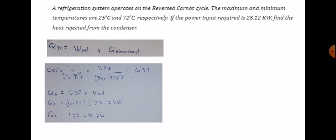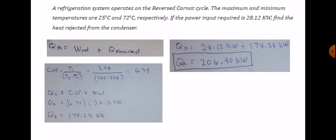COP times the power input. Our power input is 28.12 kilowatts and our COP is 6.34. Multiplying these gives us the absorbed heat: 178.28 kilowatts. Now calculating for the heat rejected, we use the formula: